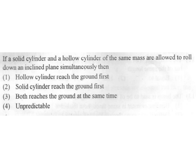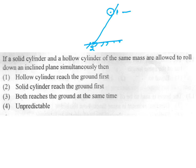If a solid cylinder and a hollow cylinder of the same mass are allowed to roll down an inclined plane simultaneously, which reaches the ground first? Using energy conservation from position 1 to position 2: potential energy at position 1 is mgh, kinetic energy at position 1 is zero.